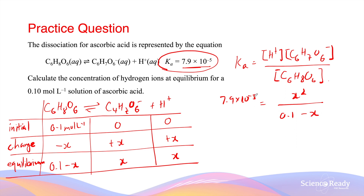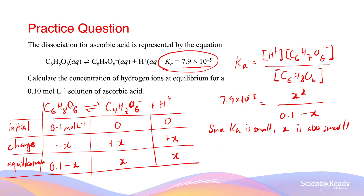After this step, we can use the quadratic formula to solve for x. Alternatively, we can make a simplified assumption to avoid the quadratic formula. The assumption is that since Ka is a small number, the value of x is also small. X represents the proportion of the original acid that dissociates to form ions. If the equilibrium constant is small, then the amount of acid that dissociates is relatively small as well. This allows us to simplify the Ka expression into x squared divided by 0.1.